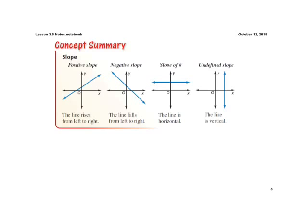So here are our slopes: positive slope rises from left to right, negative slope falls from left to right, slope of zero is horizontal, and an undefined slope is vertical, straight up and down.